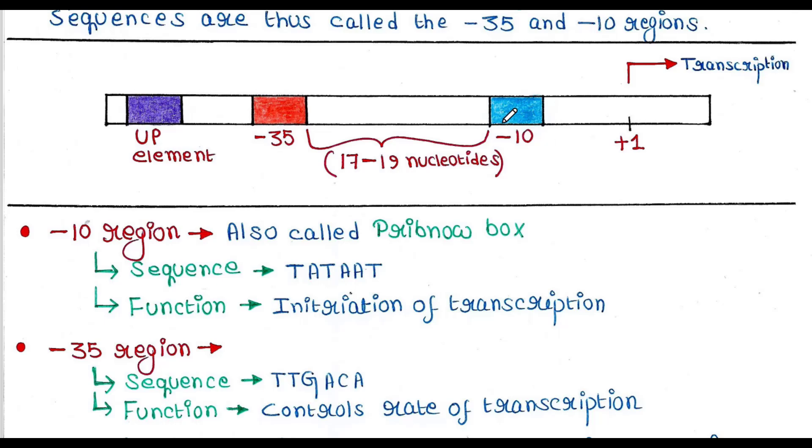This minus 10 region is also called the Pribnow box. Its sequence is TATAAT. Its function is to initiate transcription.